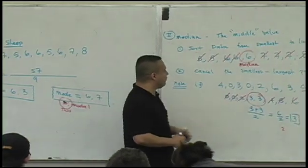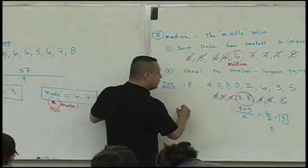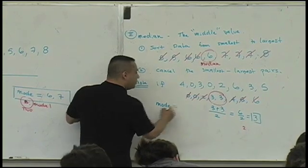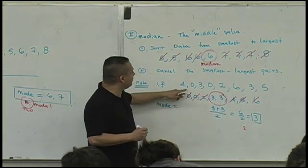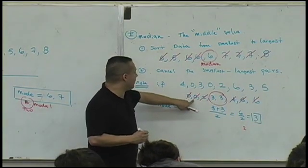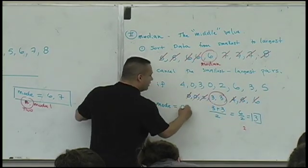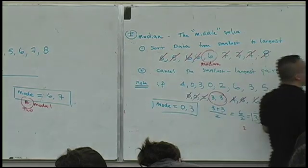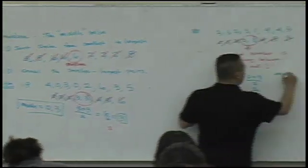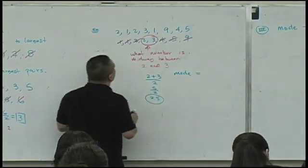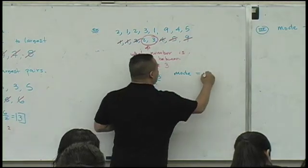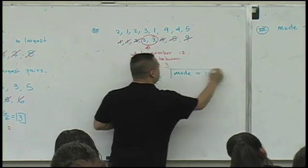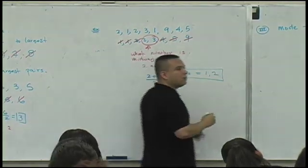What about this example here? What's the mode here? Can you tell me what the mode is for this data set? Zero and what? Three. Oh, another bimodal data set. What's the mode over here for this? What is it? One and two. Oh, all of these are bimodal. All of these are bimodal.